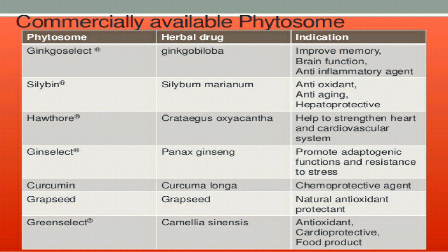Ginkgo biloba is generally used for immunomodulator drugs; silibin or silymarin is used as a hepatoprotective agent; Othorn is used for heart diseases; ginseng is used for its adaptogenic property; curcumin is used for anti-cancer activity; grape seed and green tea are used for antioxidant properties. Thank you.